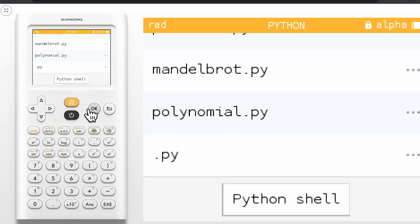You'll be prompted to name your new script. The alpha lock automatically turns on when naming the script. Note the lock symbol beside alpha at the top right corner of the screen.